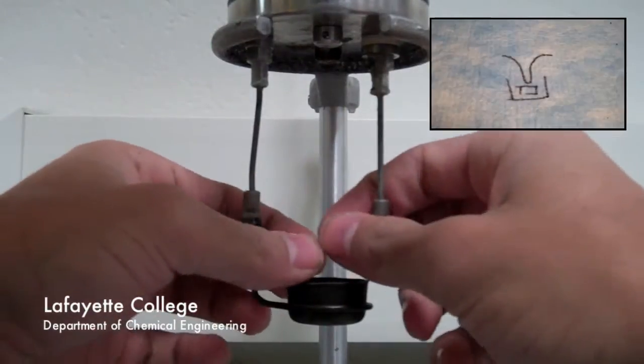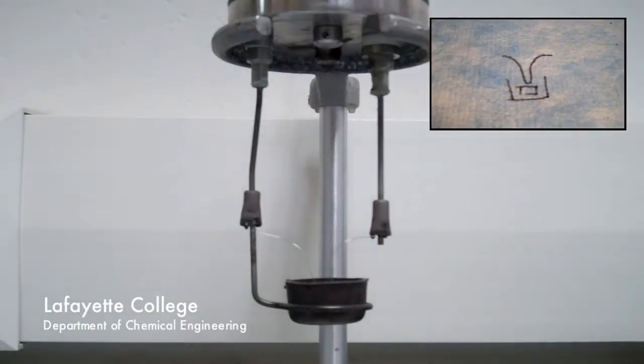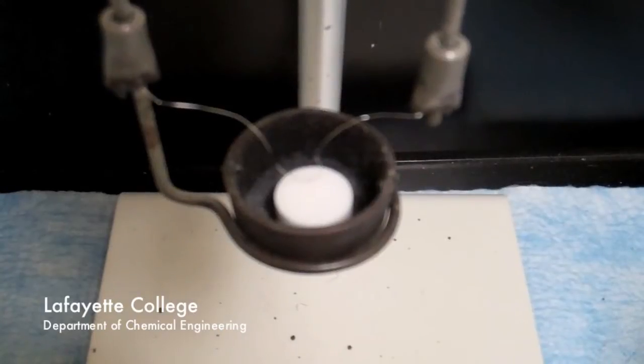Bend the middle of the wire in a U shape so that it passes just barely over the sample. The shape of the wire and distance from the sample are very important and must be done correctly for the sample to combust. See the inlay for a schematic representation. At the end it should look like this.